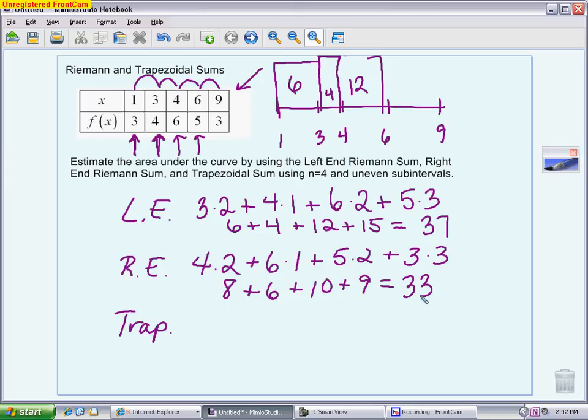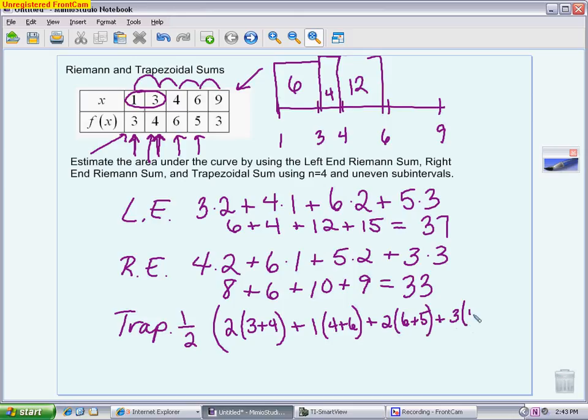Now, my trapezoid, what you're doing is making a series of 4 trapezoids. Each trapezoid is 1/2 the height times the bases added together. I can put the 1/2 in front of everything. My first trapezoid has a height of 2 that comes from the distance between 1 and 3, and it has bases that are 3 and 4. This time, you're using both sides. My next trapezoid has a height of 1, my bases are 4 and 6. My next trapezoid has a height of 2, bases are 6 and 5. And my last trapezoid has a height of 3, bases are 5 and 3. So, this we get 2 times 7 is 14, 1 times 10 is 10, 2 times 11 is 22, 3 times 8 is 24.